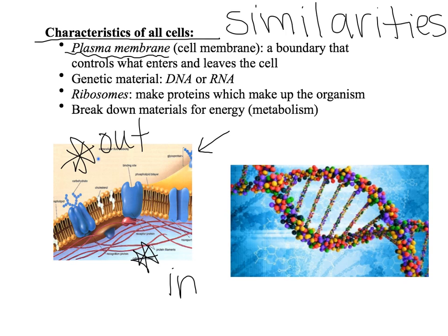Something else all cells have in common is they have some sort of genetic material. Most of the time we'll talk about DNA, but there are times where it is something called RNA. We're going to spend weeks on DNA and even RNA. This animation that kind of looks like a nerd rope candy is a computer animation of DNA. DNA is what makes up who you are, who other living things are, and what their characteristics are — it determines those things about them.